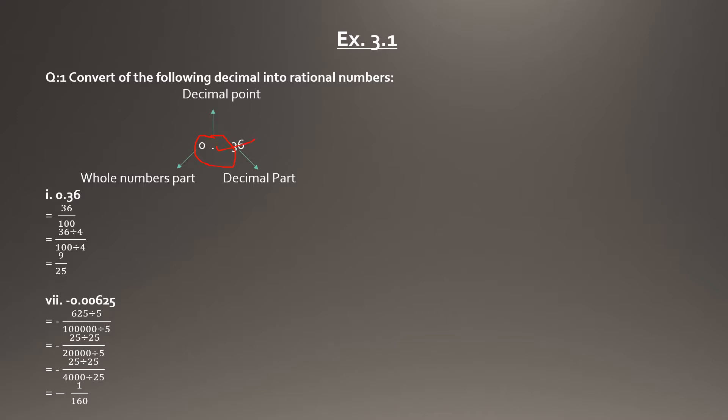The decimal number is 0.36. To convert it, we write 36 over 1, and since there are 2 digits after the decimal point, we put two zeros in the denominator, giving us 36 over 100. Both 36 and 100 are divisible by 4.